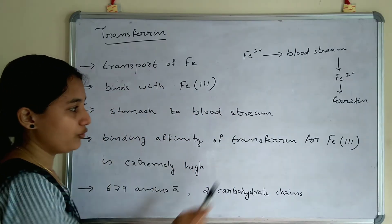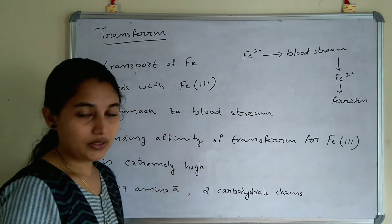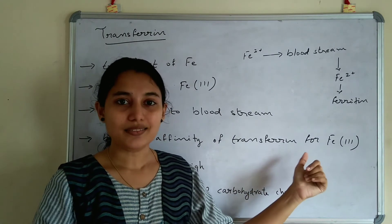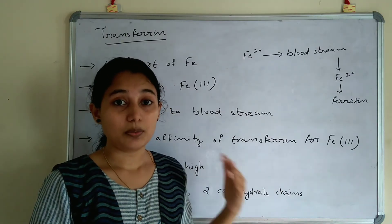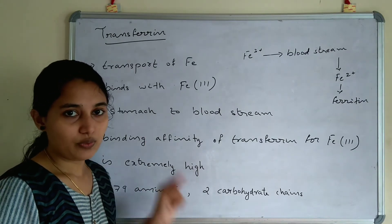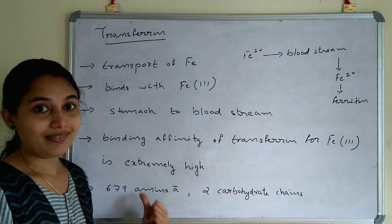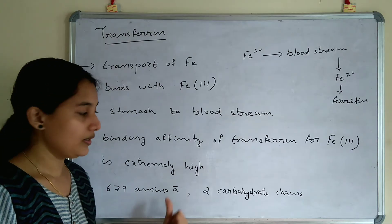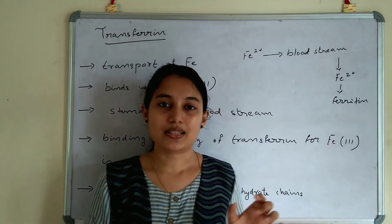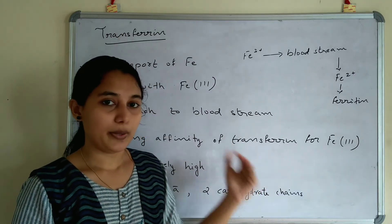The binding ability of transferrin for Fe3+ is extremely high — higher than that of ferritin. Transferrin contains 679 amino acids and 2 carbohydrate chains. In ferritin, each subunit has 175 amino acids across 24 protein chains, whereas transferrin has 679 amino acids. The binding ability for Fe3+ is greater in transferrin compared to ferritin.